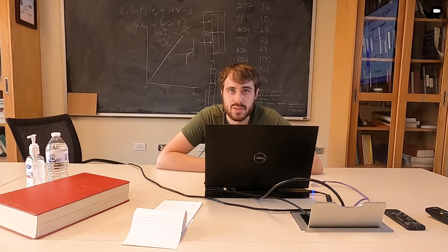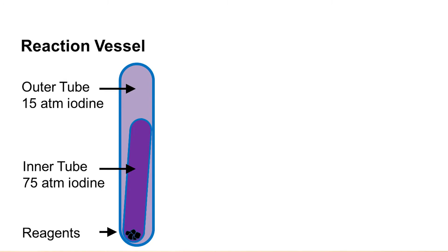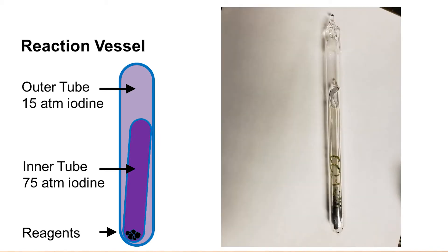To prevent the tubes from exploding and be able to reach the pressures needed to drive this chemical reaction, I took my reaction vessel, placed it into a second glass tube that I then pressurized but to a lower pressure. This extra pressure on the outside helps prevent the reaction vessel from exploding and helped me reach the pressures of iodine gas that I needed to drive this reaction.